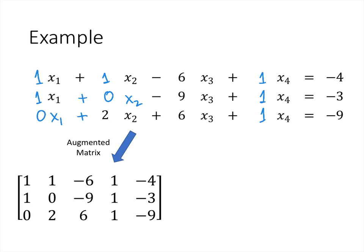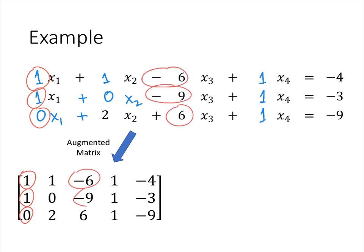Each of these coefficients — for example the first column is 1, 1, 0 — gives us the entries of each column. The first column corresponds to x1, the second column corresponds to x2, the third column corresponds to x3, the fourth column corresponds to x4, and then the last column corresponds to the other side of the equation. That's where we get our augmented matrix.